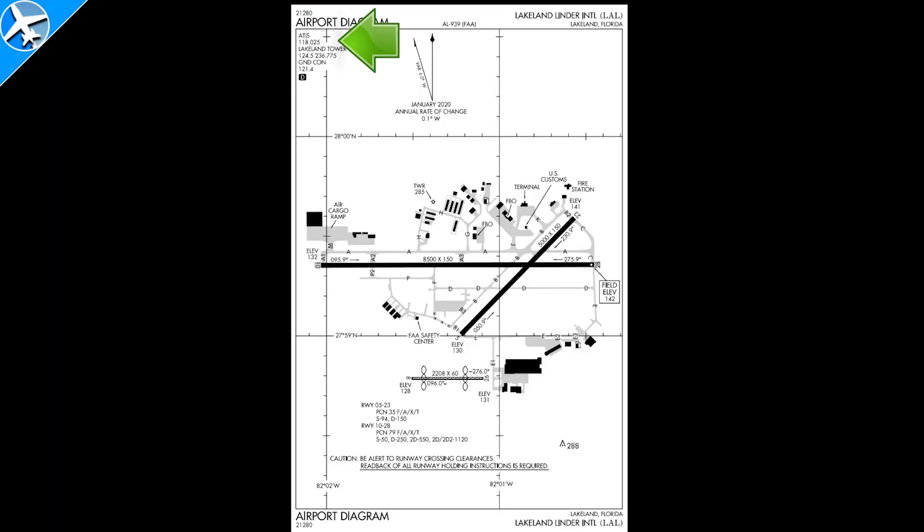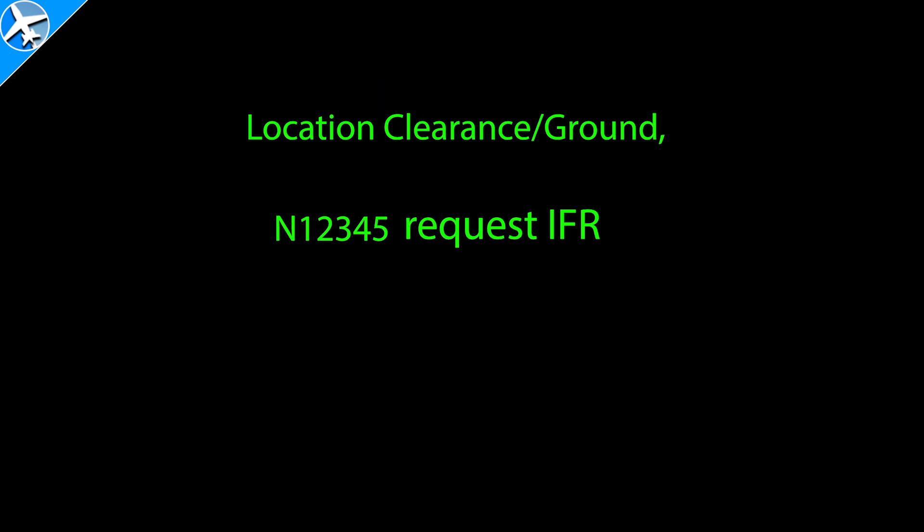Before requesting an IFR clearance, be sure to listen to the ATIS. When requesting an IFR clearance, say the name of the facility, say your full call sign, request IFR, and then the location you're going to. The city name can be used, but you can also use the airport's three or four letter identifier. And it will sound like this.